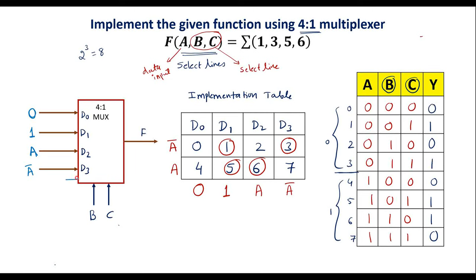The enable line is active low. Now let me verify: when B=0, C=0, D0 is selected so F = 0 ✓. When B=0, C=1, D1 is selected so F = 1 ✓. When B=1, C=0, D2 is selected so F = A; for minterm 4 (a=0) F=0 and for minterm 6 (a=1) F=1 ✓. When B=1, C=1, D3 is selected so F = A-bar; for minterm 3 (a=0) A-bar=1 ✓ and for minterm 7 (a=1) A-bar=0 ✓. All outputs match the given function.